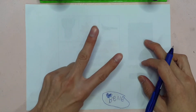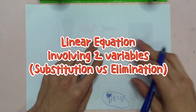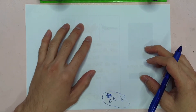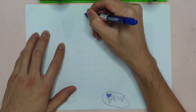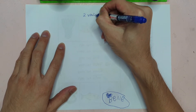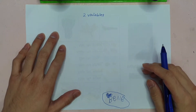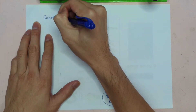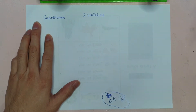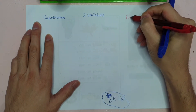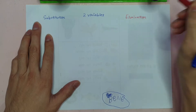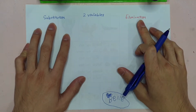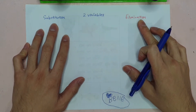Today it's about 2 variables. The previous few videos covered basic 1-variable and single fractions — all those hard ones, done. Today: 2 variables. And there will be 2 methods. Number 1, substitution. And the next method, elimination. There will also be another one called graphical, which will be on the next video.